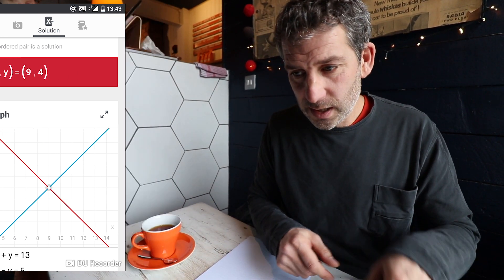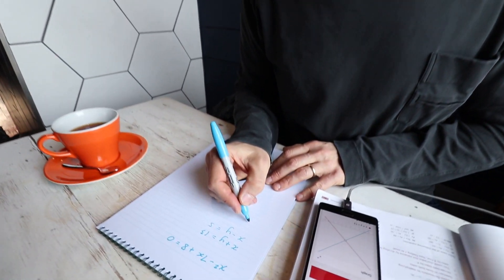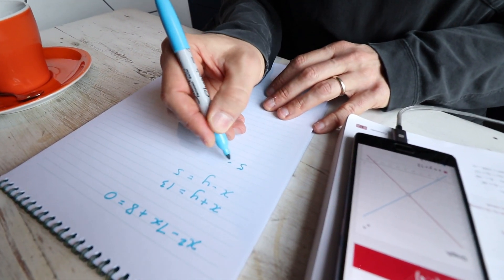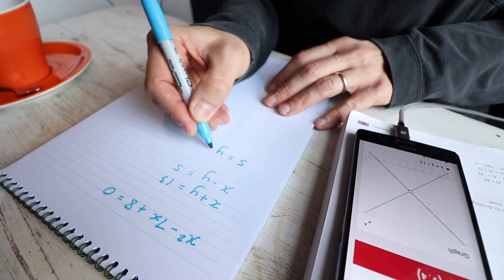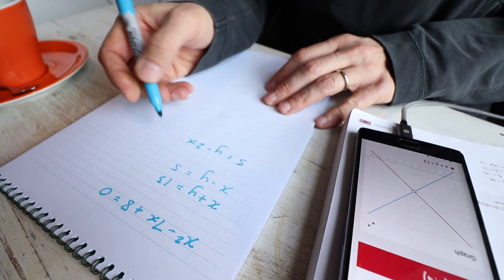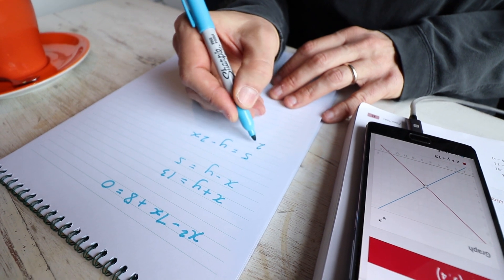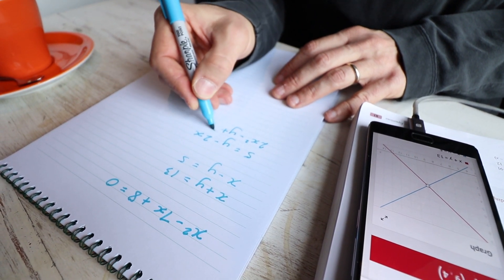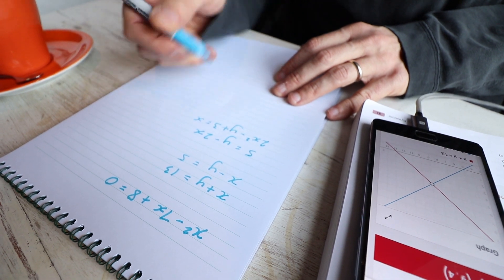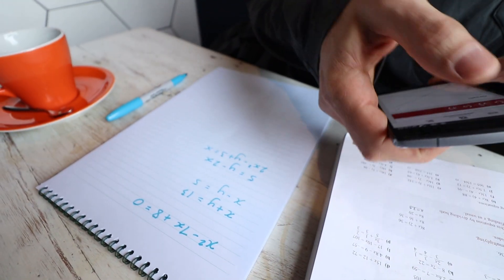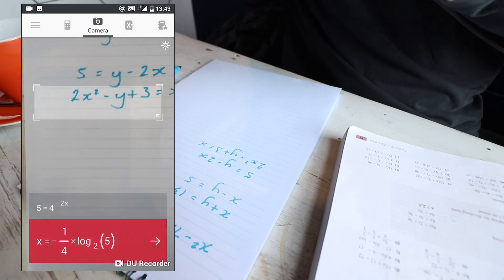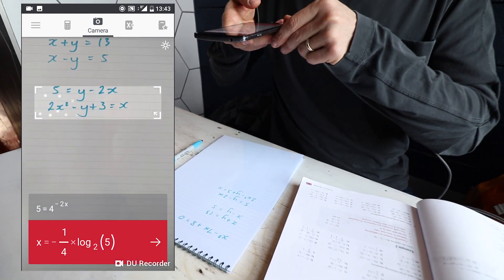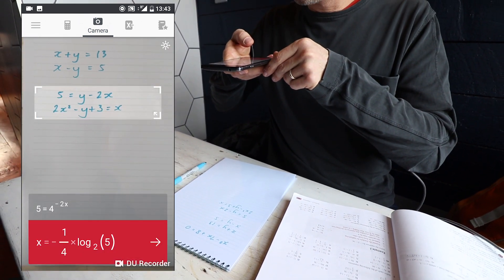Right. The last one is a simultaneous equation involving a quadratic. So exactly like 5 equals y minus 2x. And then the second equation will have 2x squared minus y plus 3 is equal to x. Can it solve this? I hope so. Let's see if I can get it all in the shot there, focus. There you go.